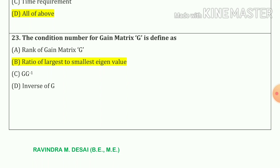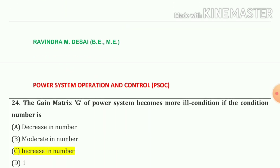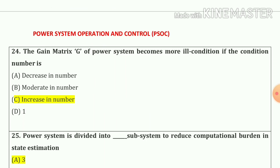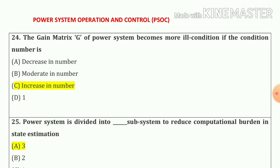Question number 23: The condition number of gain matrix G is defined as option number b — ratio of largest to smallest eigen value. Question number 24: The gain matrix G of power system becomes more ill-conditioned if the condition number increases. Option number c.